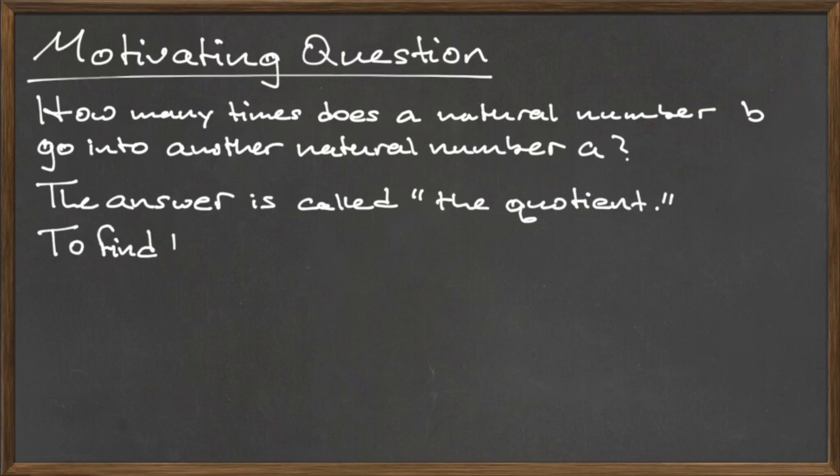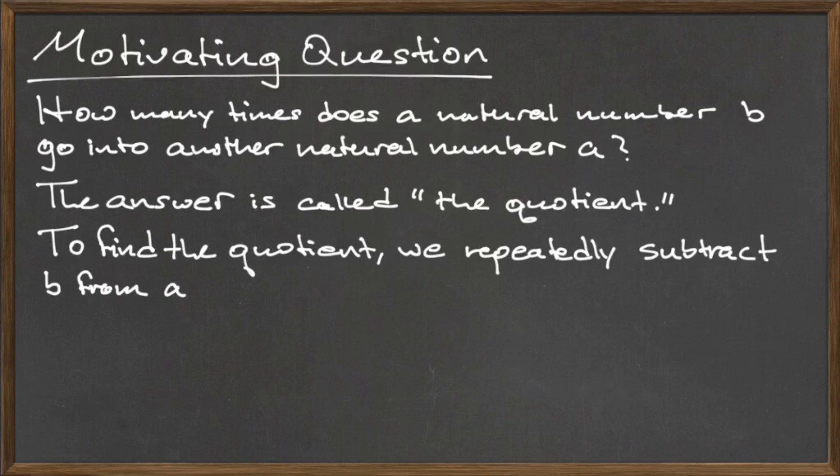The answer to this question is called the quotient. To find the quotient, we repeatedly subtract b from a and stop before the answer becomes negative. The number of subtractions that we computed is called the quotient, and the number that is left over at the very end is called the remainder.